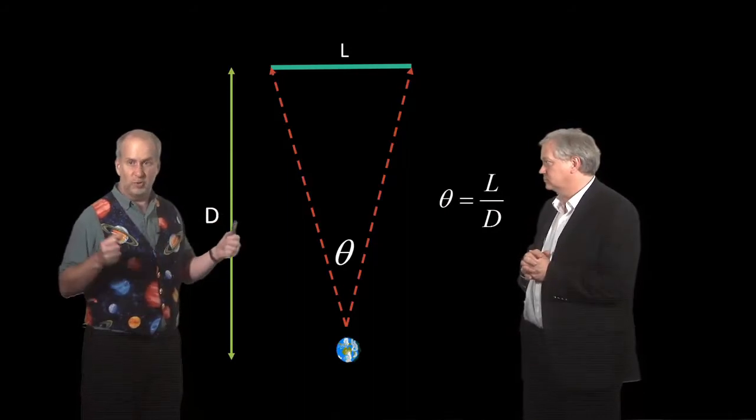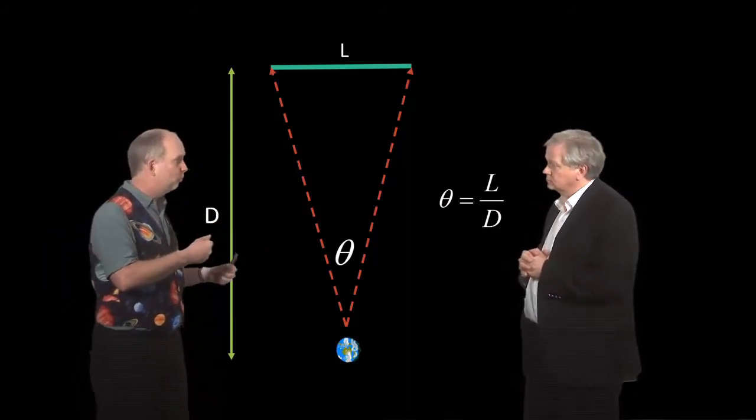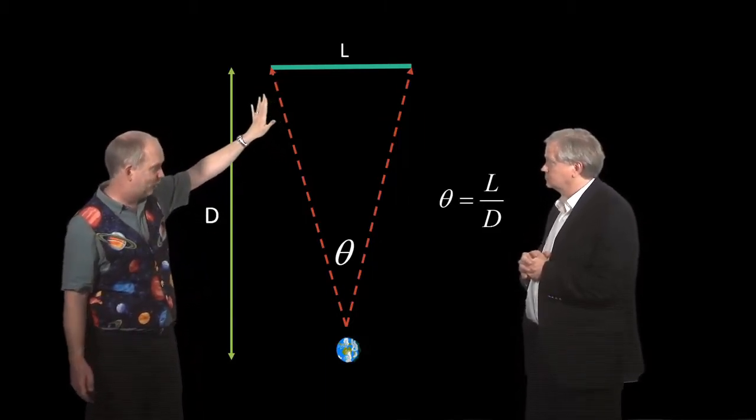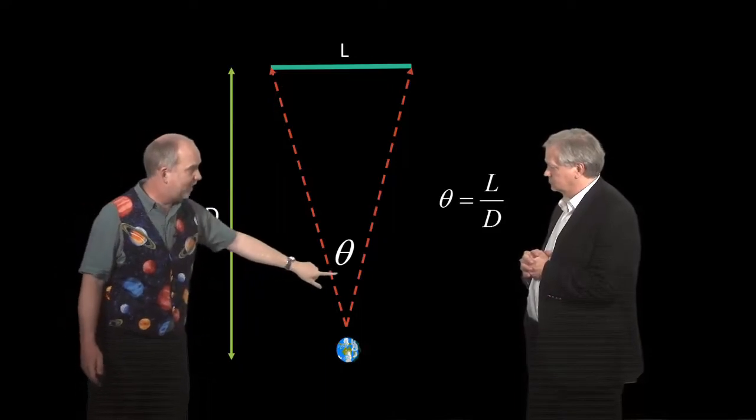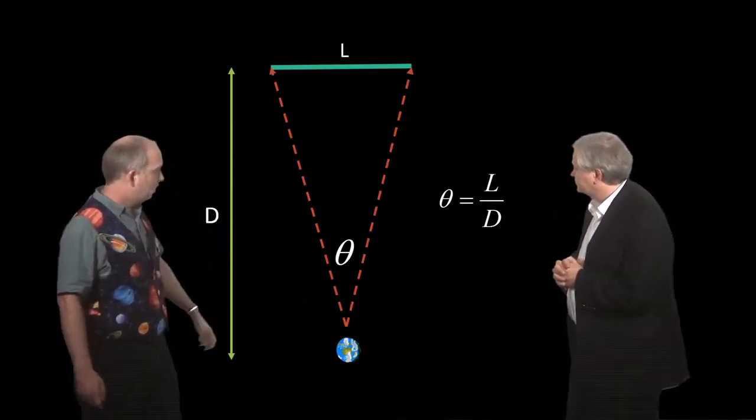In principle, you can also use something that's of known length. If you know how long something really is and move it further away, it should look smaller, so that gives you the distance. So in principle, we know how long this is because we can calculate the physics of the early universe. We can measure what angle, which is about one degree, these lumps appear to be, and that will give us a distance.